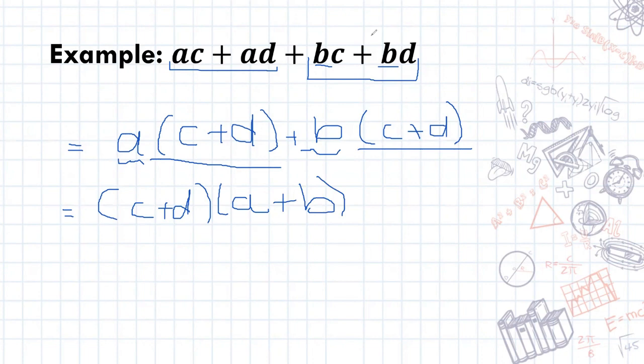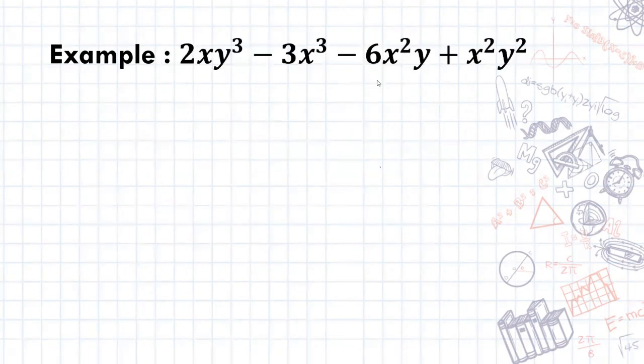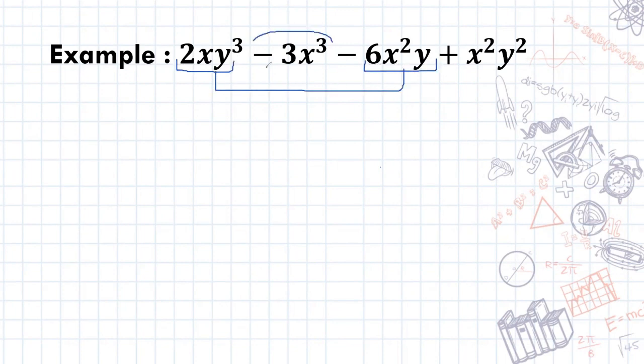Let's do another example. In this example, we're going to look for something common. I wouldn't do this one here. I would actually group these two and these two together. Before we do the actual factorizing, let's write down what we've decided.